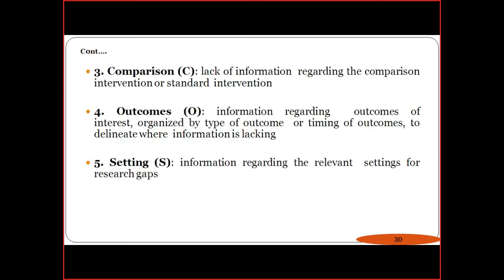The third element is Comparison — lack of information regarding comparison of interventions or the standard deviation. Sometimes the same information can be given by two or three different resources, and we have to compare them to determine which one is authentic and correct. We must use that particular authentic data for the research.